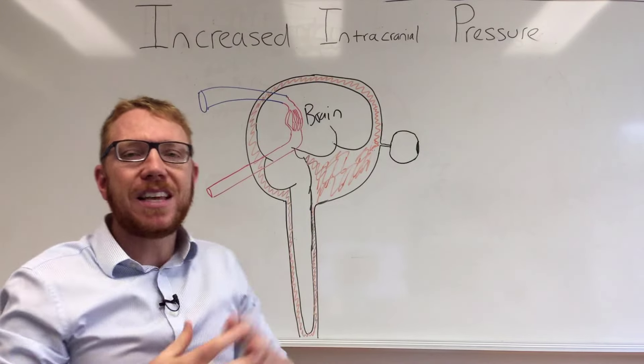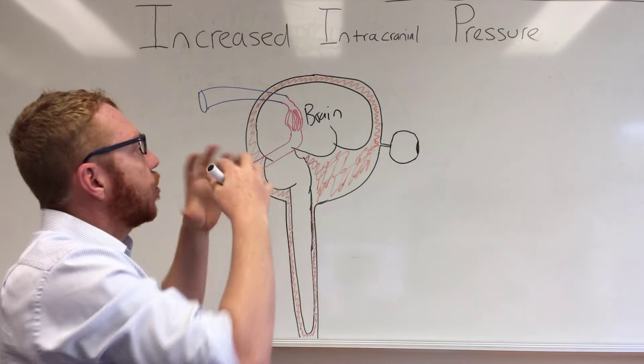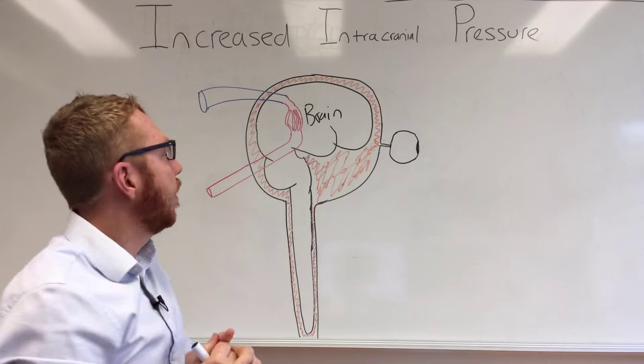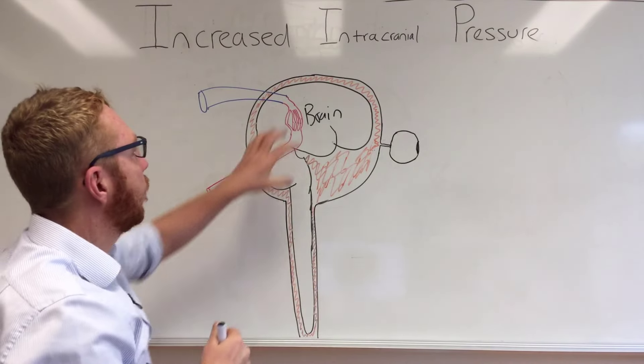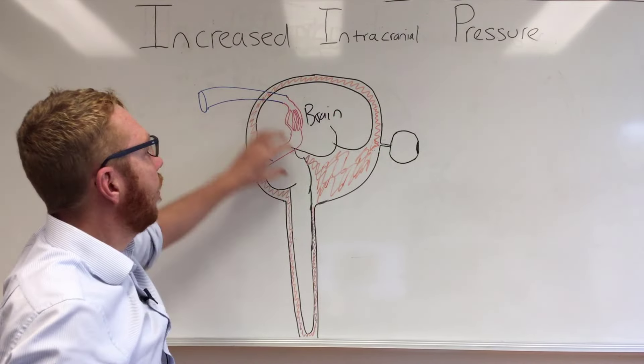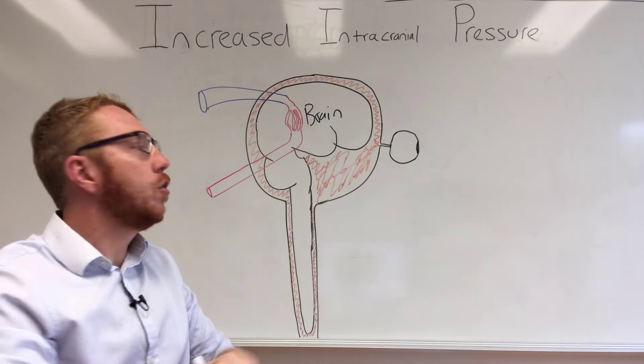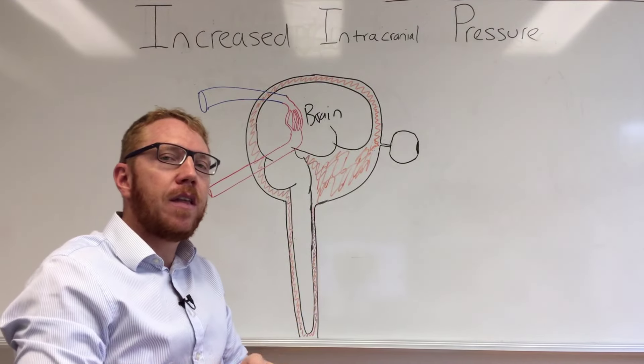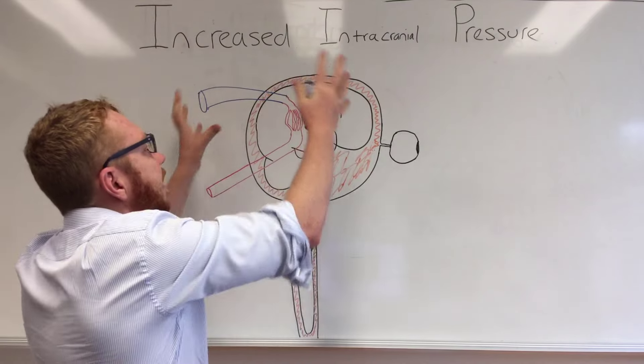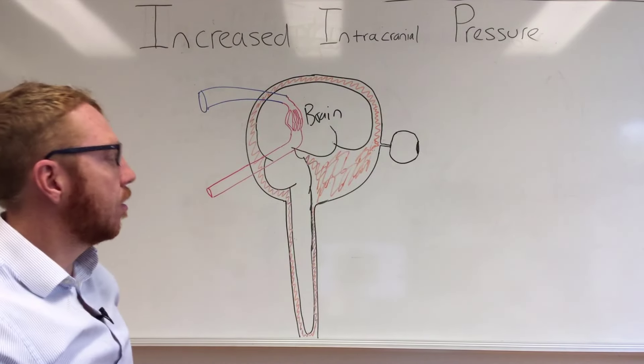What we can see from this: there's three main volumes within the cranium itself. We've got the brain, we've got the blood, and we've got the CSF. This gives you three components that make up what is encompassed within the cranial cavity itself.